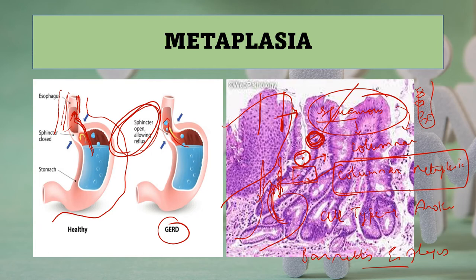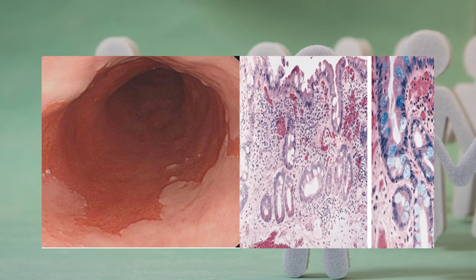The light blue cells highlighted here are goblet cells. All these are intestinal type glands, and these ones are goblet cells. This is the endoscopic appearance and this is the biopsy image. Because of the reflux of acid, the epithelium has undergone metaplasia from squamous to columnar - that's why it appears salmon red on endoscopy, and the biopsy shows goblet cells with intestinal type glands.